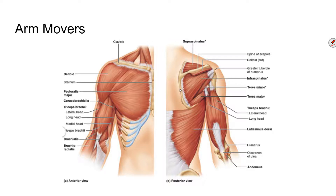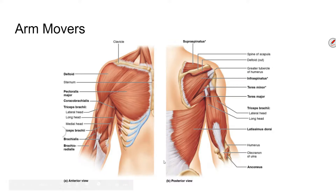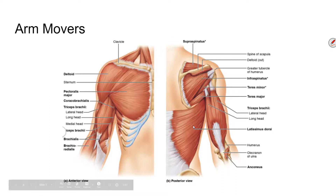The three prime movers of the arm are the pectoralis major, the latissimus dorsi, and the deltoid. The pectoralis major pulls the arm toward the middle — it adducts the arm medially. The latissimus dorsi, or lats, is the opposite; it lowers the arm and adducts it toward the back. Think of these two as acting opposite of each other. Both are very powerful muscles — the lats in particular are engaged anytime you pull something down or toward you.